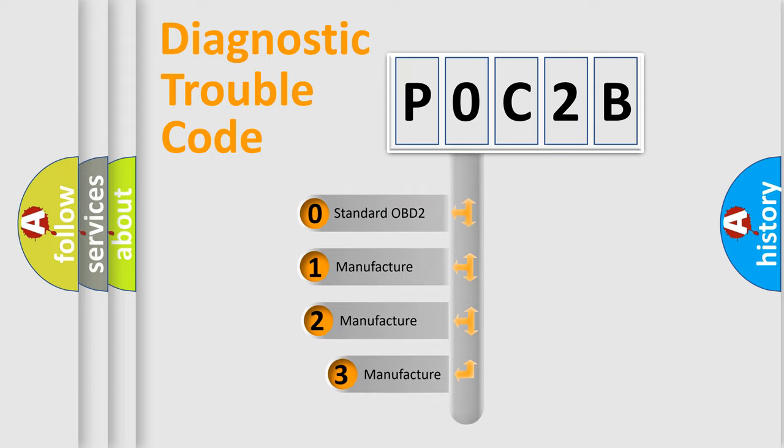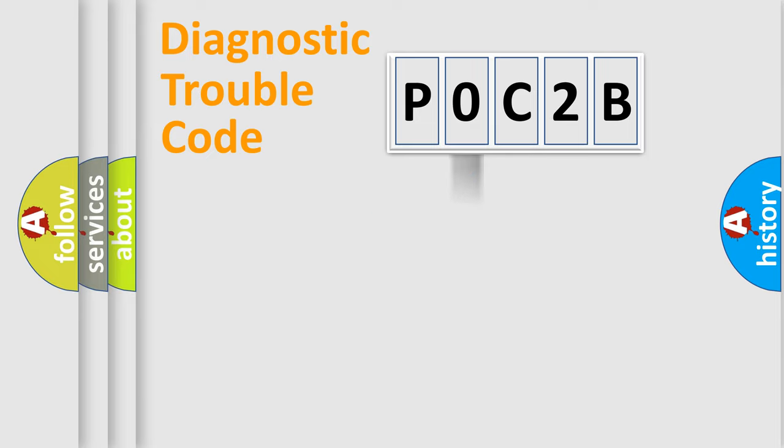If the second character is expressed as zero, it is a standardized error. In the case of numbers 1, 2, or 3, it is a manufacturer-specific expression of the car specific error.